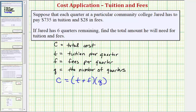Which means for Jared, the total cost is equal to the quantity, the tuition per quarter is $735, plus the fees per quarter is $28, and then times the number of quarters. Jared has six quarters remaining, so we have times six.